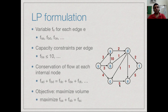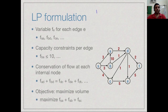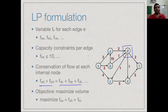Each variable is constrained by the capacity of its edge — for example, F_BA must be less than or equal to 10. We also enforce conservation of flow at each internal node: at node D, the incoming flow F_AD plus F_BD must equal the outgoing flow F_DC plus F_DE plus F_DT. These capacity and conservation constraints together define the feasible region.